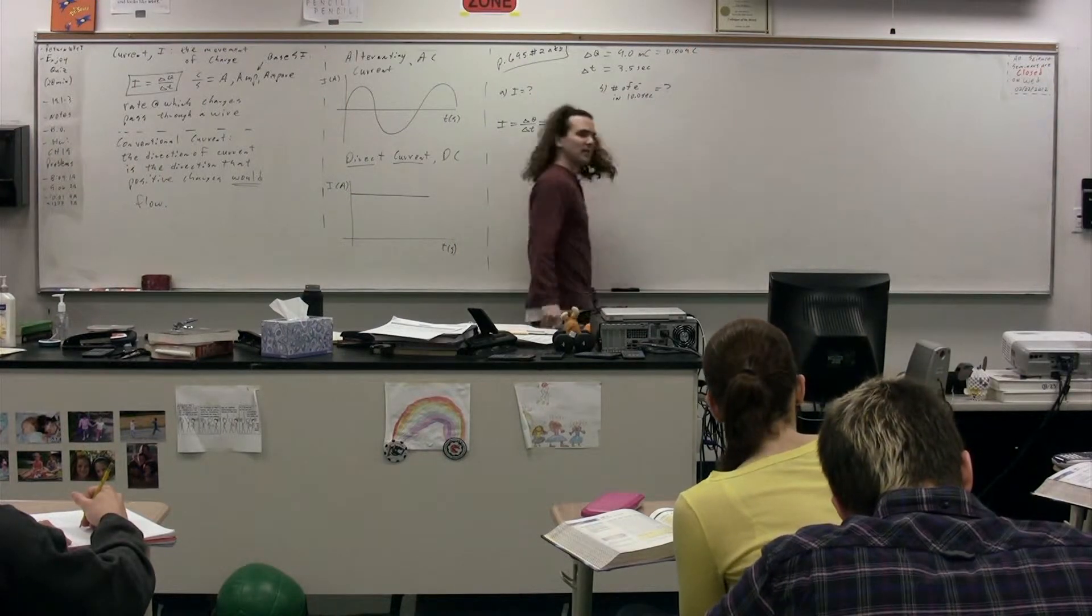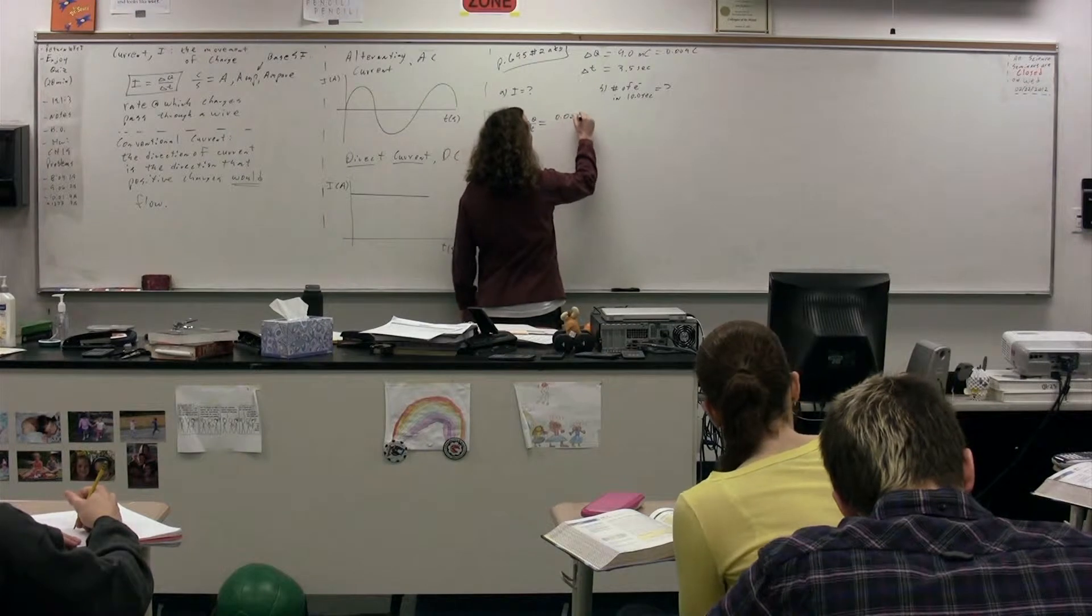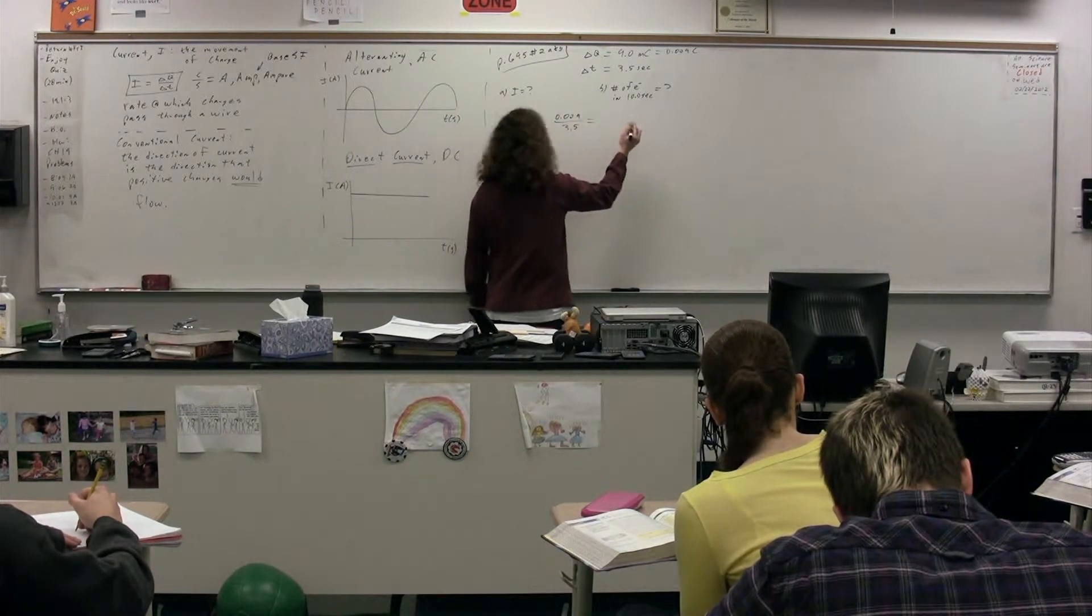Right. There are 1,000 millicoulombs in a coulomb. So we have 0.009 coulombs over our 3.5 seconds. We get what?